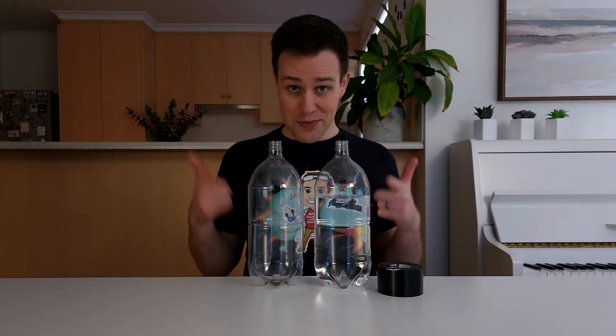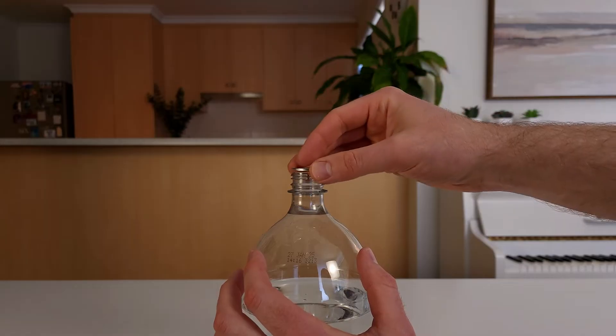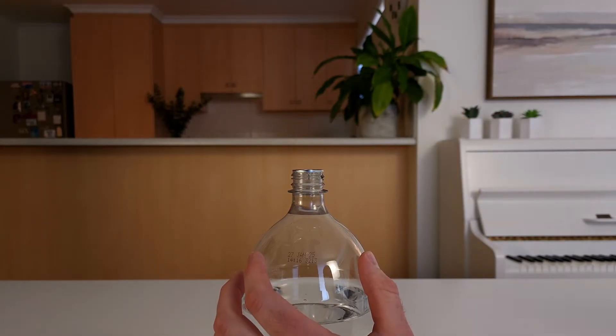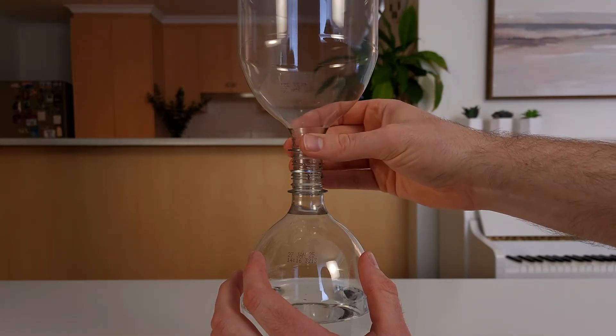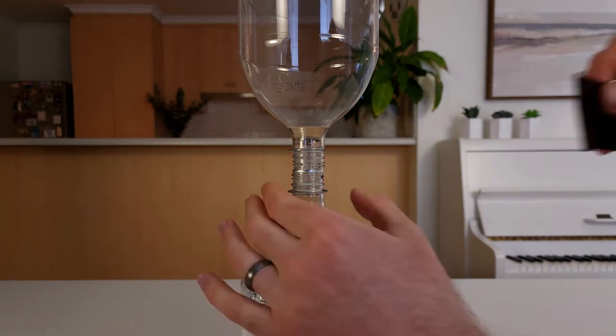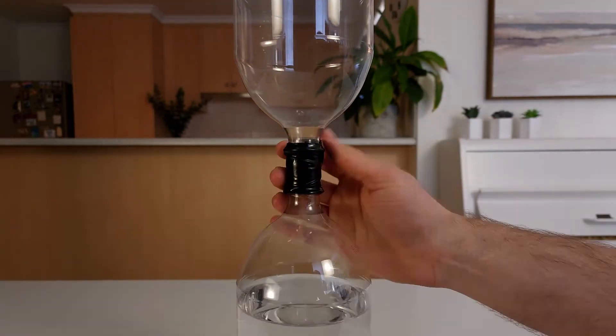The first way of connecting the bottles together involves placing a washer on top of the bottle filled with water, balancing the empty bottle on top of this washer, and tightly taping the two bottles together with duct tape.